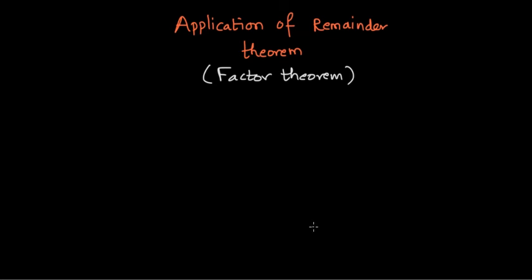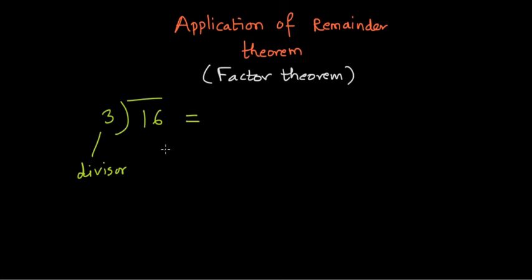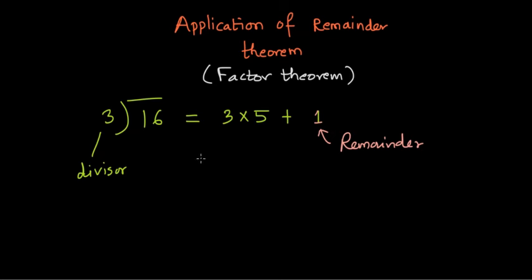So what exactly is the remainder theorem? Let us try to understand the concept. I'll take any number, say 16. If I want to divide 16 by 3, then 3 is the divisor and 16 is the dividend. I can write 16 as 3 times 5 plus 1. That 1 is the remainder. Because the remainder is not 0, we say that 3 is not a factor of 16.